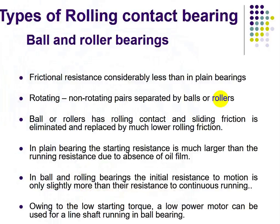Rolling contact bearings are mainly classified into ball and roller bearings. Their properties include: friction resistance considerably less than in plain bearings; rotating and non-rotating parts are separated by balls or rollers between the rotating shaft and the stationary bearing. Ball or rollers have rolling contact, and sliding friction is replaced by much lower rolling friction. In plain bearings, starting resistance is much larger than running resistance due to the absence of an oil film.